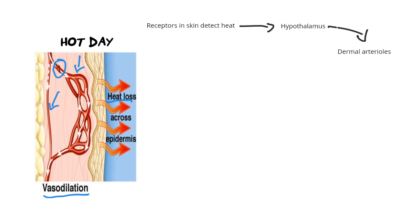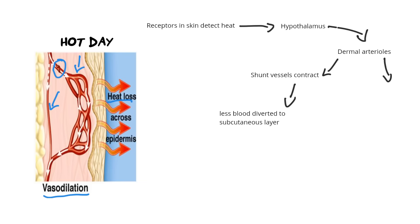There are still two outcomes corresponding to the two kinds of blood vessels. First, the shunt vessels — the ones deeper down in the fat layer — are going to contract. Because they are contracting, less blood is diverted into the subcutaneous layer, so there's now less blood and less heat going into your fat layer.